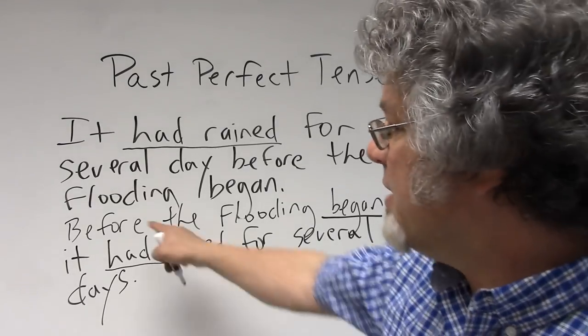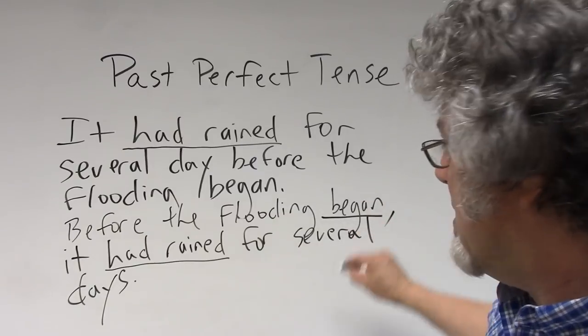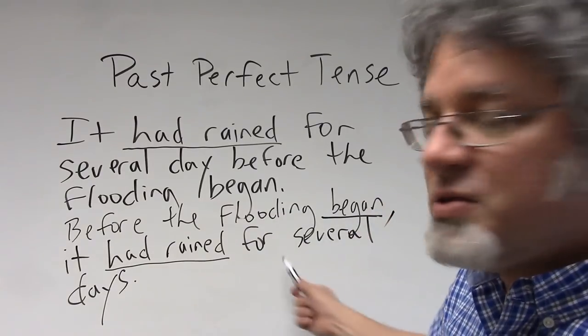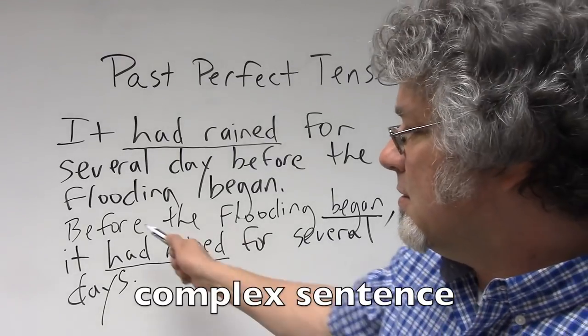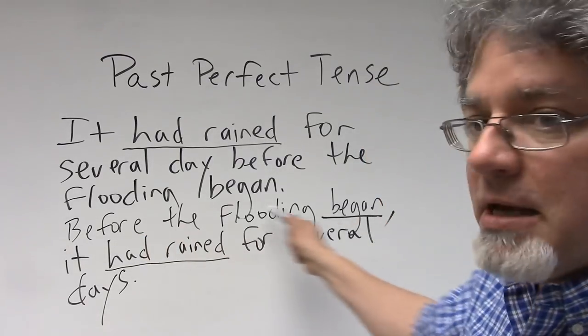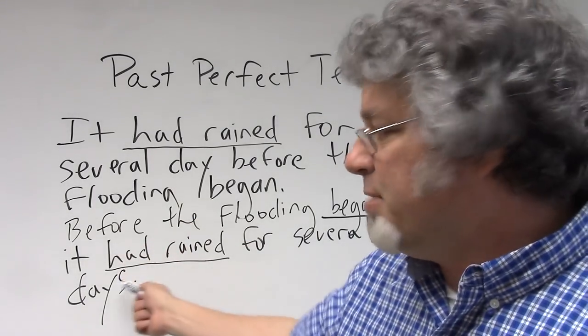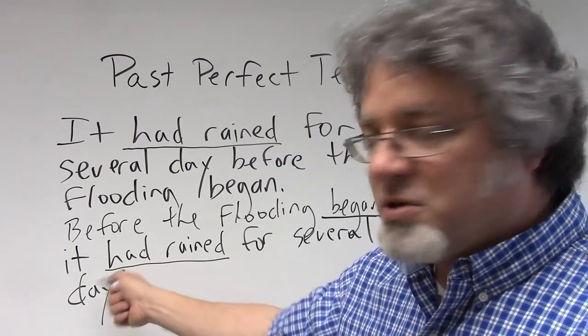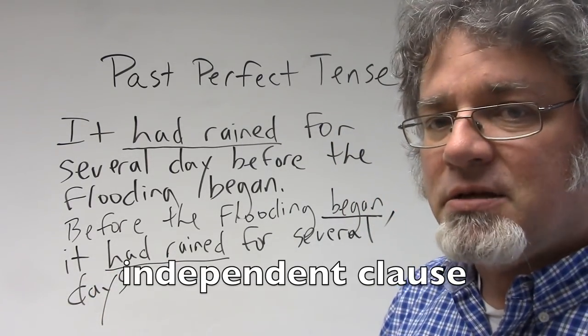If you start a sentence like this, make sure you put the comma at the end. This is an example of a complex sentence. 'Before the flooding began' is the dependent clause, and the main part of the sentence, which includes the past perfect tense, is the independent clause.